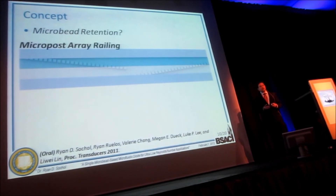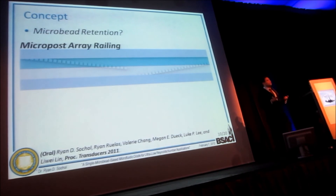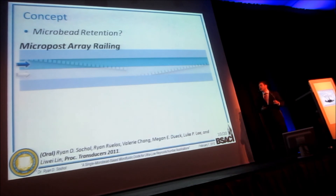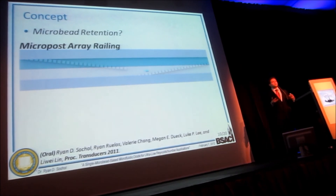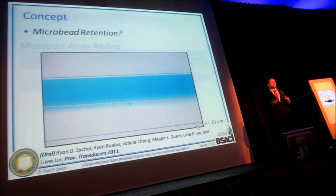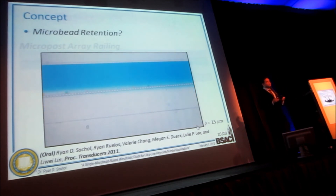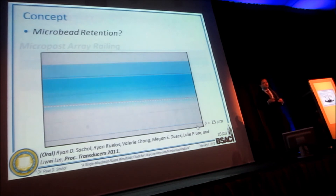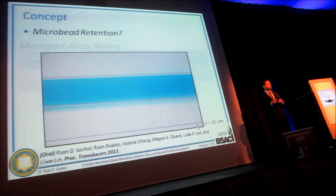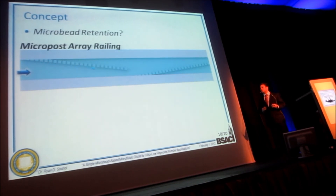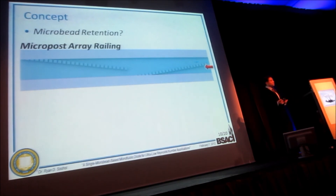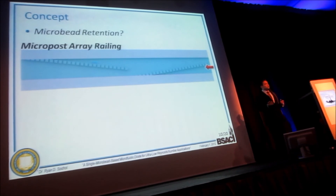Previously at last year's Transducers, we presented a technology called micropost array ramp. Two fluid flows are input in parallel, with microposts arrayed through the chamber. When a suspension of microbeads is input, the microbeads are railed or transported into adjacent flow streams — the very first process ever developed to rail microbeads in a microfluidic system. We also found that if you load a single suspension of microbeads and reverse the flow polarity during the process, this technology functions similarly to a one-way track for microbeads, which we felt might solve the issue of microbead retention.